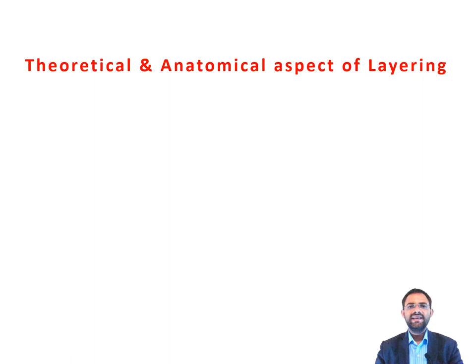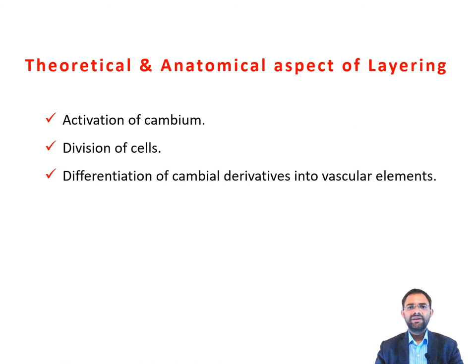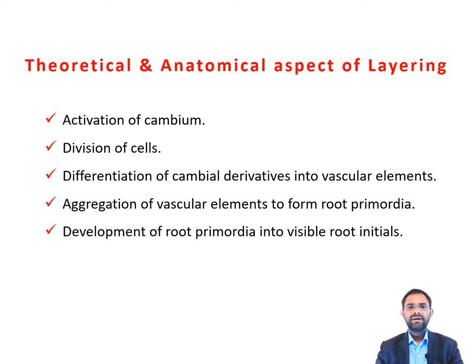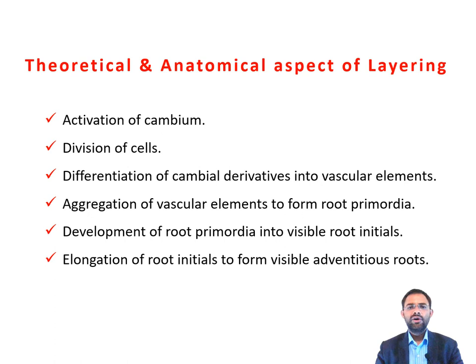Now the theoretical and anatomical aspect of layering. As layering involves the development of adventitious roots on the stem, this process includes: first, the activation of cambium; then the division of cells takes place; after that the differentiation of cambium into vascular elements; then the aggregation of these elements to form root primordia; then the development of root primordia into root initials; and finally the elongation of root initials to form the visible adventitious roots.